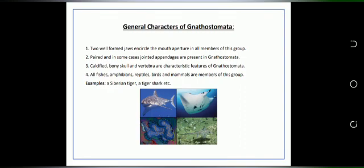All fishes, amphibians, reptiles, mammals and birds are members of this group. Some examples of Gnathostomata are Siberian tiger, tiger shark and etc.